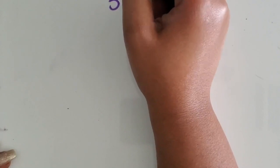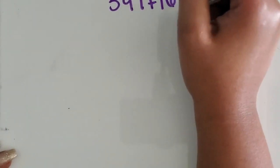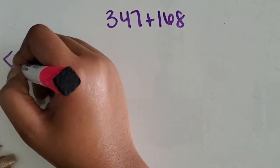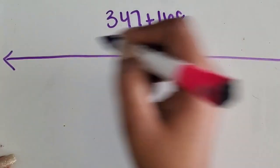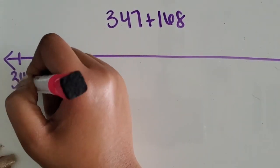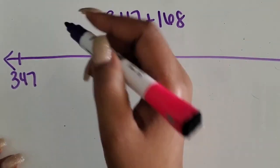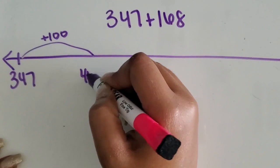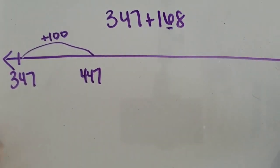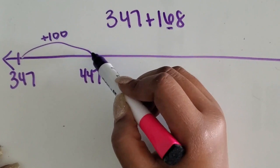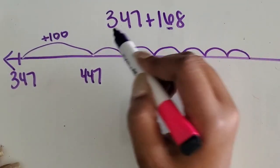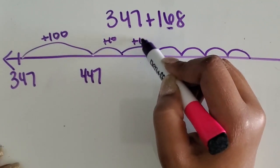I'll show you two more. Again, our number is 347 plus 168. We can start with 347 again, add the 100, and then take the 60 and break it up into six tens. So 1, 2, 3, 4, 5, 6, adding 10 each time.